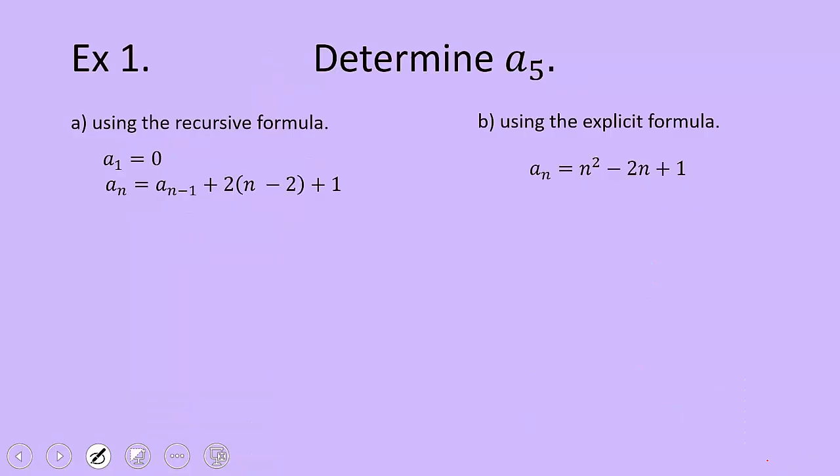In our first example, the goal is to determine a sub 5, the fifth term. Now I've given you question a, which is using the recursive formula and question b, which is using the explicit formula. I'm going to tell you ahead of time, these formulas are for the exact same sequence. So we should get the same fifth number for both of them. But I'm just going to take you through how we would do that for each of these.